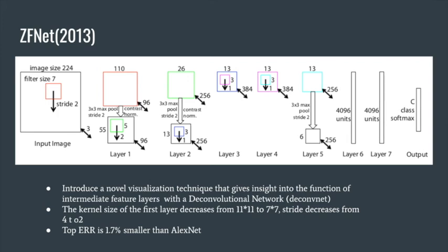AlexNet has to quickly reduce the size of feature maps due to the limit of GPU. But ZFNet doesn't have to reduce the feature map size dramatically thanks to the improvement of hardware.